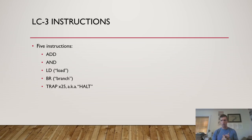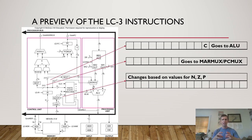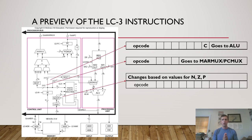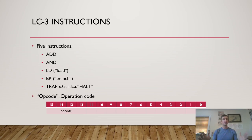So these are our five instructions: ADD, which is adding two numbers; AND, a logical and; LD, short for load; BR, short for branch; and TRAP 25, which we might also call the HALT instruction. We need a way to differentiate between these instructions, so each one has an opcode — an operation code that uniquely identifies it. On the LC3, the opcode is four bits long. All instructions are 16 bits wide, and the four most significant bits are reserved for the opcode, meaning we can have a maximum of 16 different instructions.